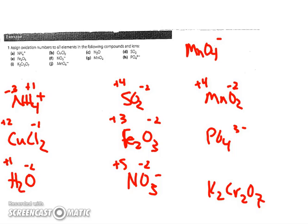PO4 three minus: the oxygen are each minus two for a total minus eight. With the minus three charge overall, that's going to leave phosphorus at a plus five. For K2Cr2O7, potassium has priority at plus one, then oxygen at minus two. This leaves a plus twelve charge for the two chromium, where each chromium would have to be plus six.